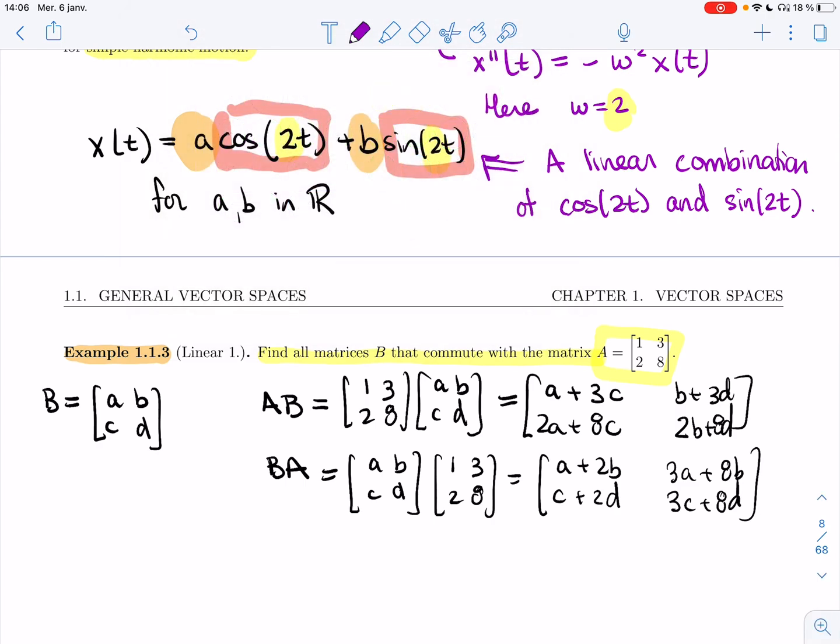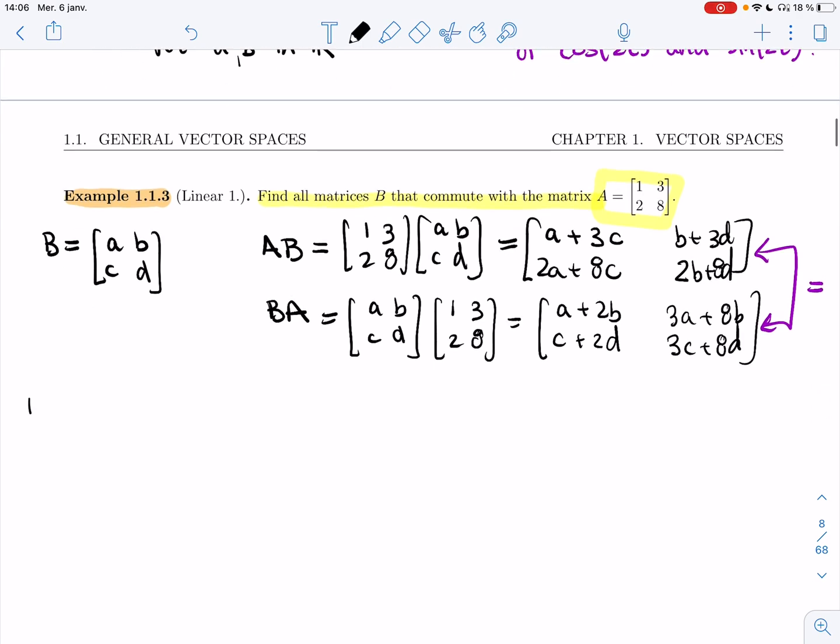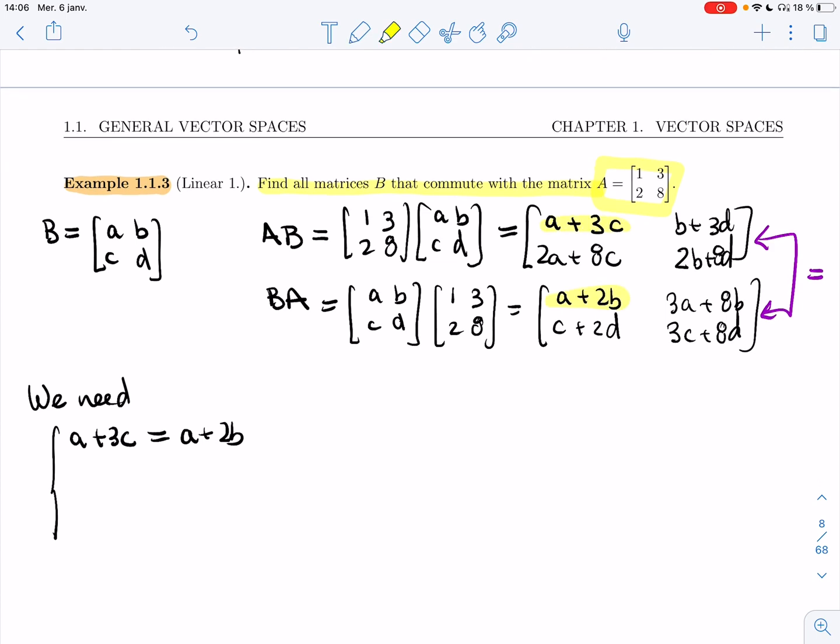We want the matrices to commute, which means we want these to be equal. That gives us a linear system. We need a plus 3c equals a plus 2b, b plus 3d equals 3a plus 8b, 2a plus 8c equals c plus 2d, and 2b plus 8d equals 3c plus 8d. We solve the linear system.